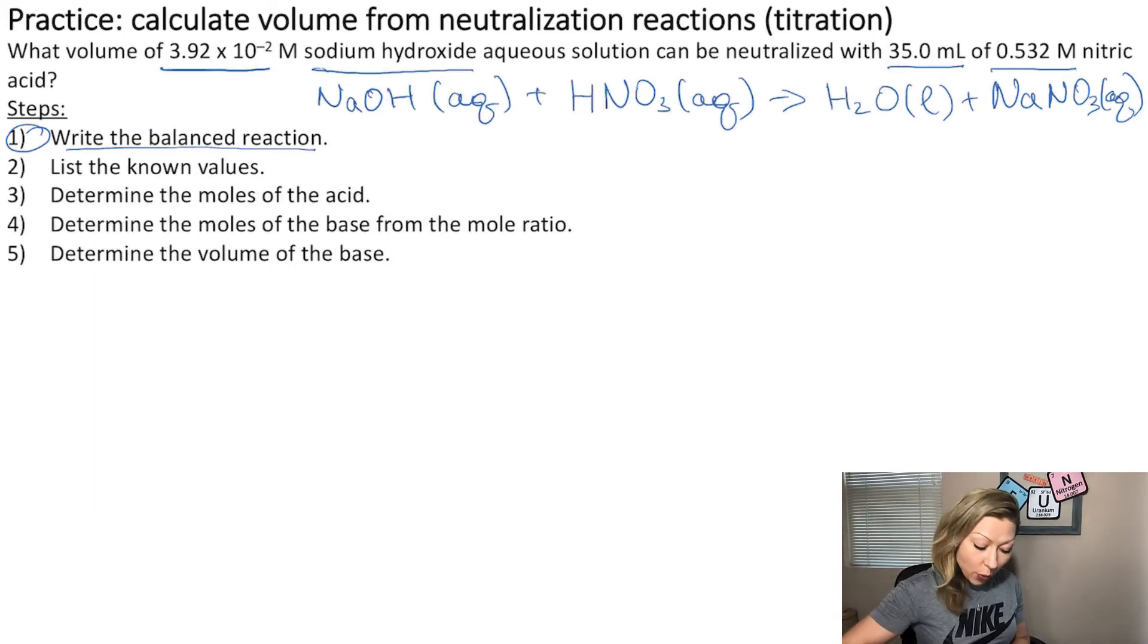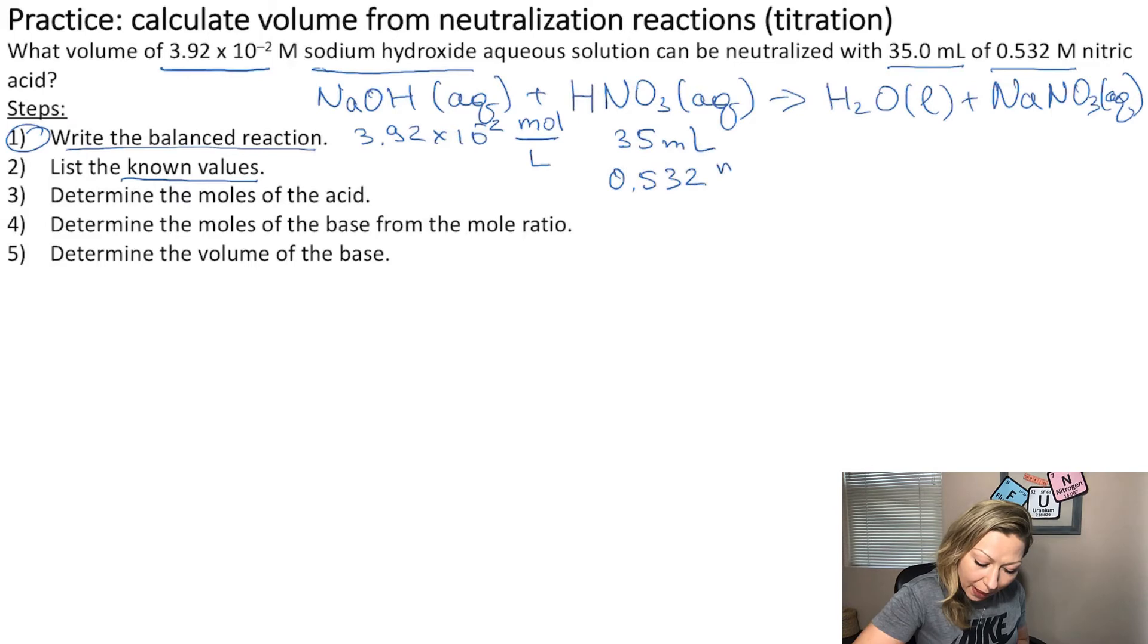What is step two? We have to list the known values. So what do we know? We know the molarity of sodium hydroxide, which is 3.92 times 10 to the negative second mole per liter. And we have some information about the nitric acid. We know that we used up 35 milliliters of it, and the concentration is 0.532 mole per liter.